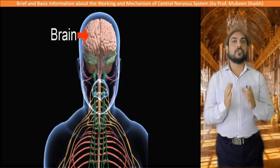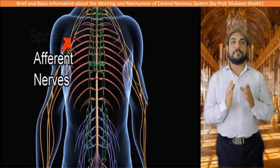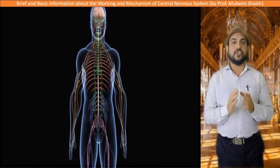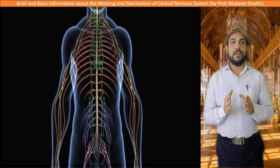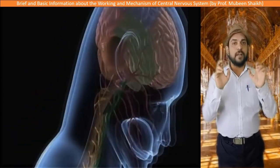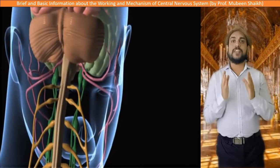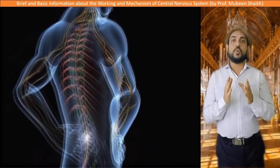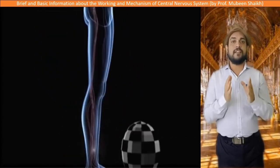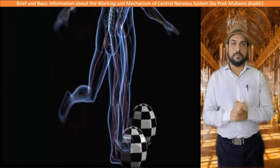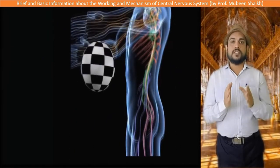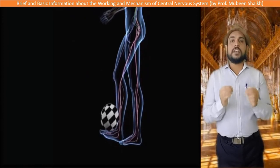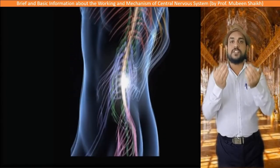Our five sense organs, which collect information from the surroundings, are connected to the central nervous system — which consists of the brain and spinal cord — through afferent nerves. For example, if a football is flying towards you, the central nervous system receives an impulse from the sense organ and generates a response to the leg muscle through efferent nerves, which makes the leg muscle kick the ball.